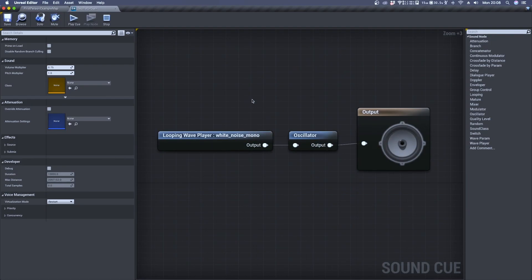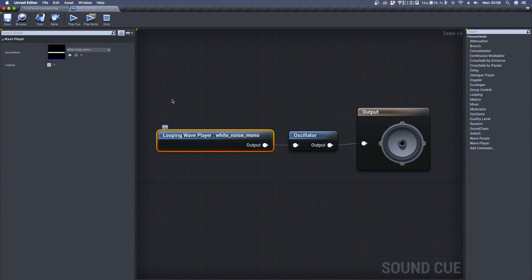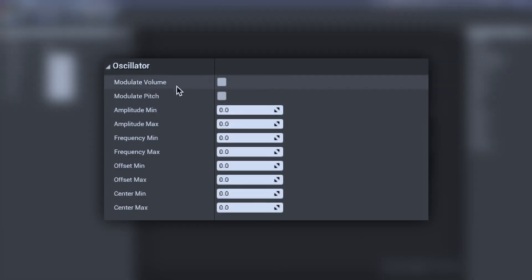Now without further ado, let's move to Unreal. Inside the sound cue, I have imported an audio file which contains white noise, which is great to experiment with the oscillator since its amplitude is constant in time. Inside this oscillator node, we can see that we can choose whether to modulate volume or pitch. Let's start with the first one.